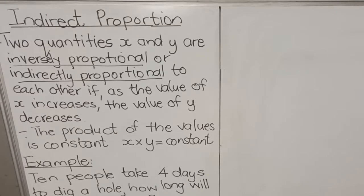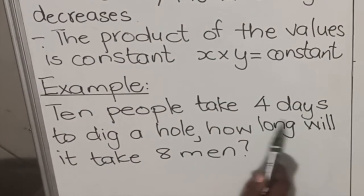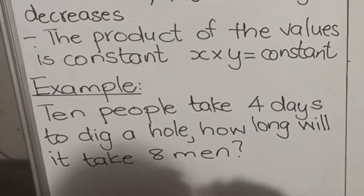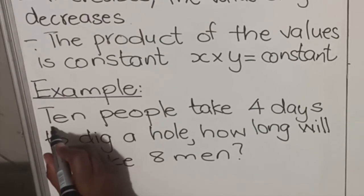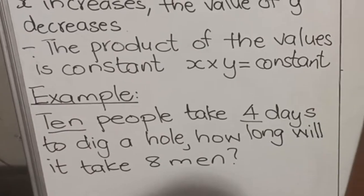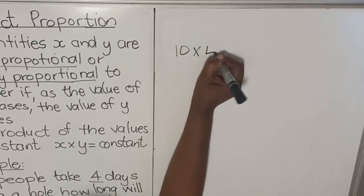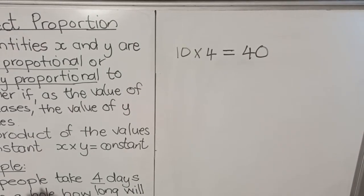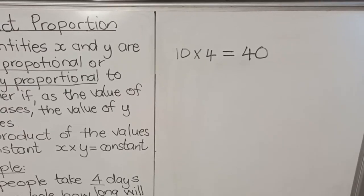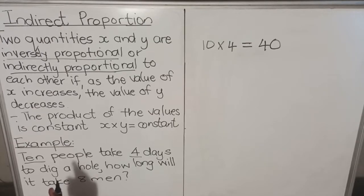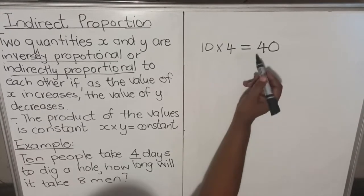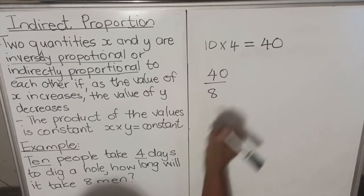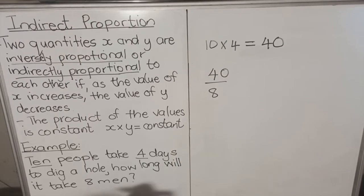Here's an example: 10 people take 4 days to dig a hole — how long will it take 8 men? The first thing you do is take the two values — 10 people and 4 days — and multiply them: 10 times 4 gives you the constant, which is 40. With inverse proportion you multiply the values to get the constant, then you divide: 40 divided by 8 gives you 5 days.